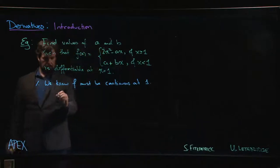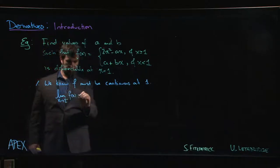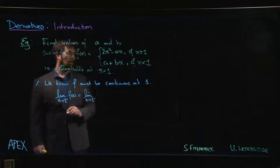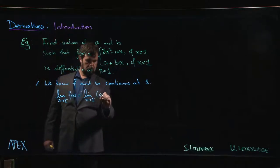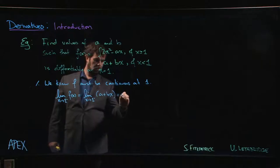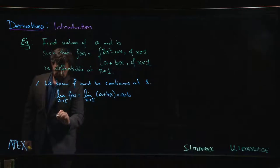So the limit as x approaches one from the left of f(x), well that's the limit as x approaches one of a plus bx, which is a plus b.